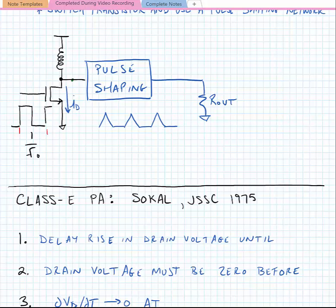In general, we try to shape the current pulses and voltage pulses so that they don't overlap. If we had some pulse shaping network that transformed the output impedance so that at the drain, the drain current looked like a triangular waveform, and simultaneously it half-rectified the drain voltage waveform and delayed it so it was out of phase with the current waveform, then ideally the product of both waveforms would be zero — meaning zero power would be dissipated at the transistor output. This pulse shaping network should also be a bandpass network to filter out the harmonics.